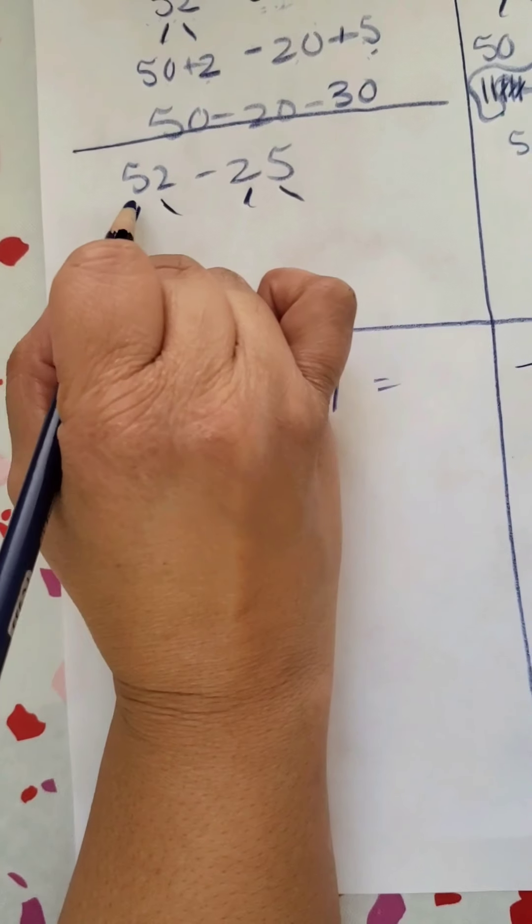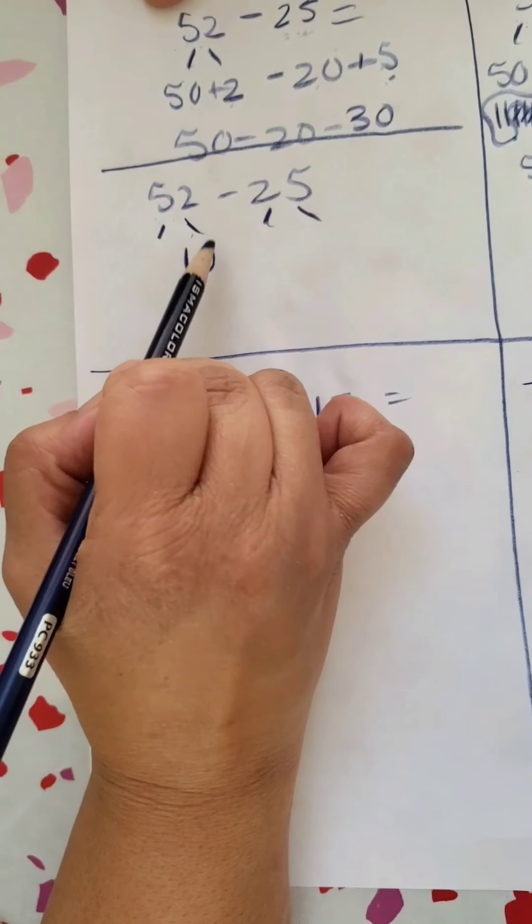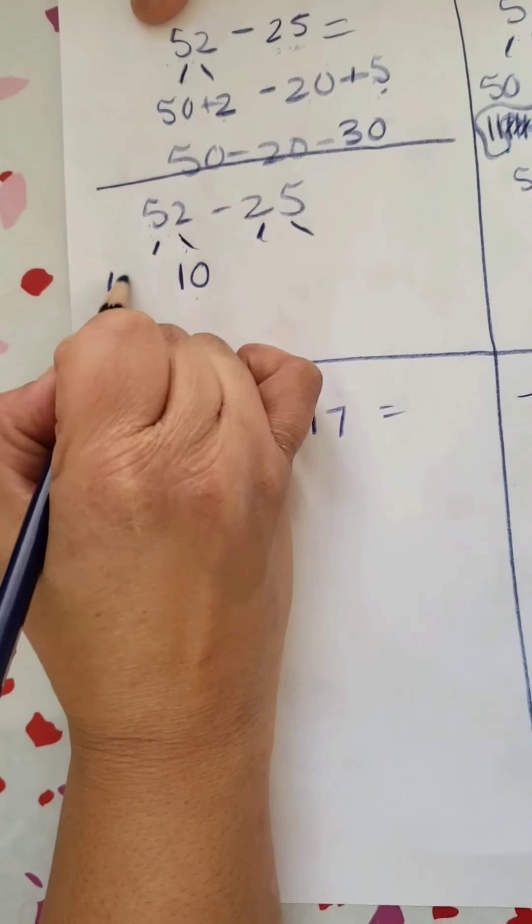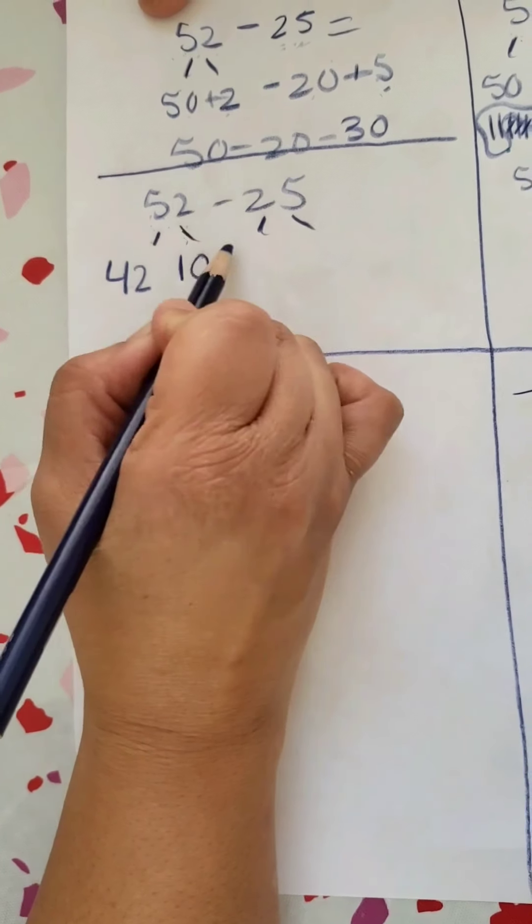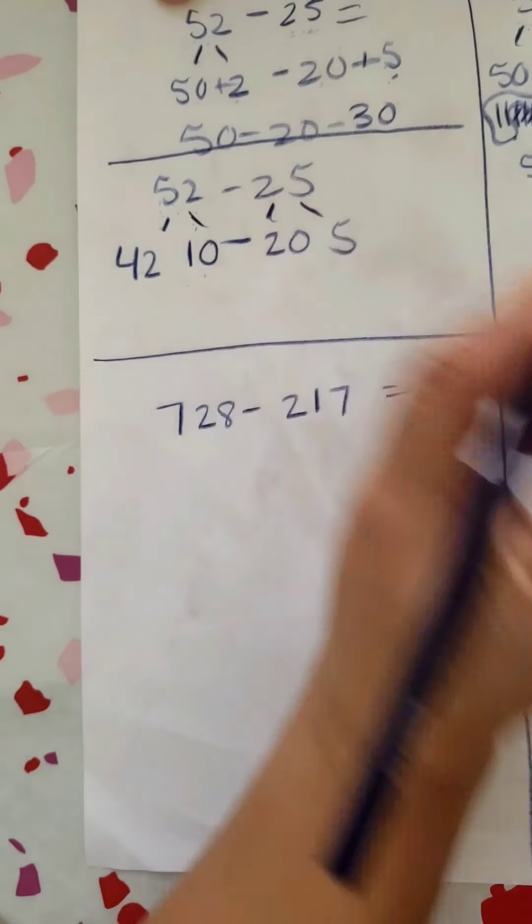Instead of doing my tens and my ones, I'm going to take a 10 from my 52. If I know that I took 10 from my 52, I know that on the other side it's going to be 42 because I know that 52 minus 10, my whole is 52. Then I'm going to subtract 20 and 5.